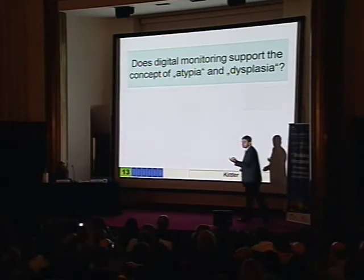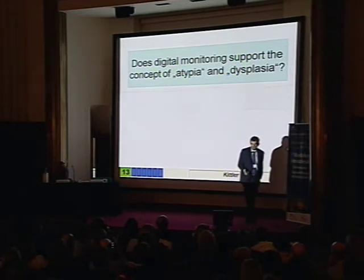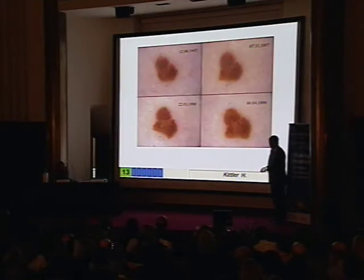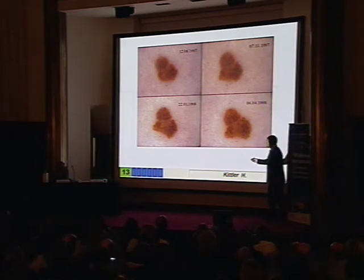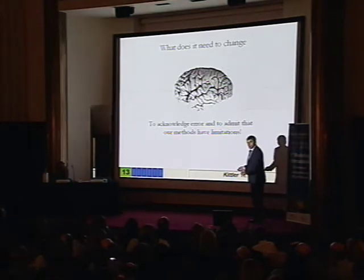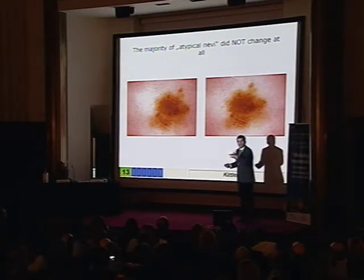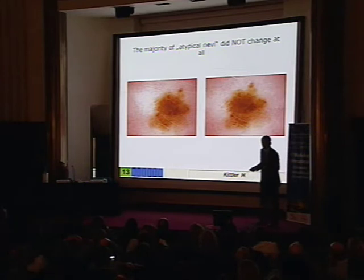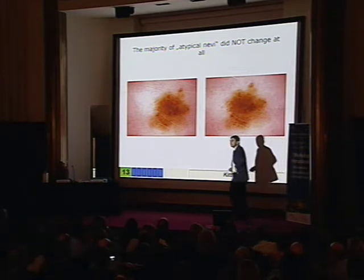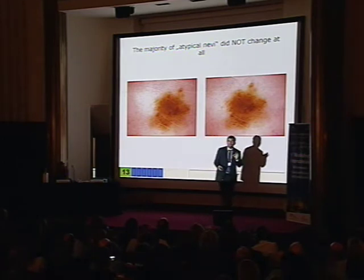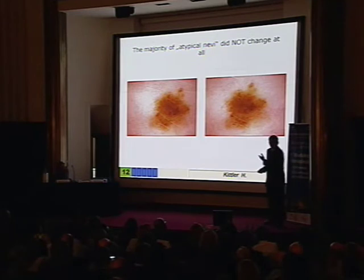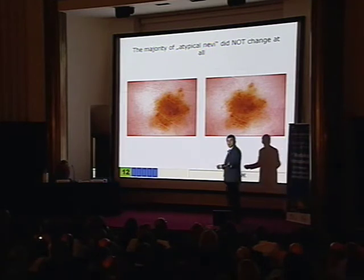Does digital monitoring support the concept of atypia or dysplasia? We have monitored more than 30,000 so-called atypical nevi, and none of them developed into a melanoma. So if the dysplastic or atypical nevus was in fact a precursor melanoma, then we should see some melanomas developing in them, but we don't see it.